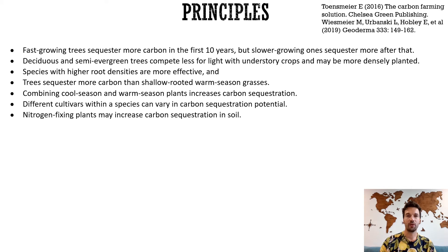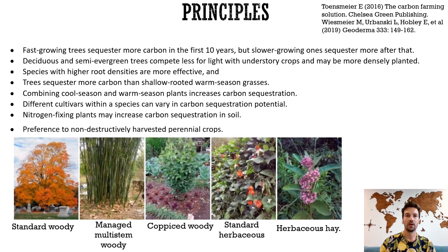Different cultivars within a species can vary in carbon sequestration potential. Researchers have found from 20 to 100% more carbon in soil under nitrogen-fixing plants. On the other hand, nitrogen-fixing plants give off extremely potent greenhouse gases such as nitrous oxide, yet scientists have not reached a conclusion about how significant this is. Preference should be given to perennials that are non-destructively harvested, including standard woody, managed multi-stem woody, coppiced woody, standard herbaceous, and herbaceous hay systems.